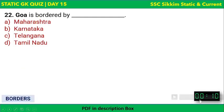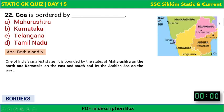Goa is bordered by both Maharashtra and Karnataka. Goa is the smallest state in terms of area. Maharashtra borders it to the north, Karnataka borders it to the east and south, and the Arabian Sea is to its west. So Goa is bordered by Maharashtra and Karnataka only.